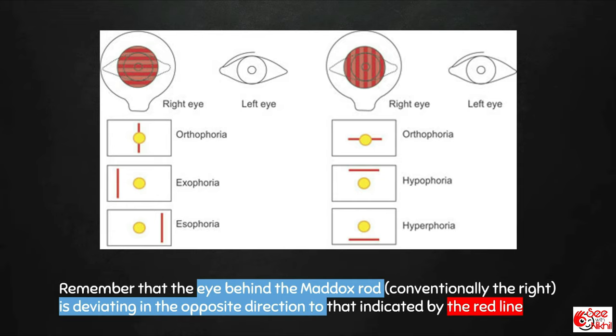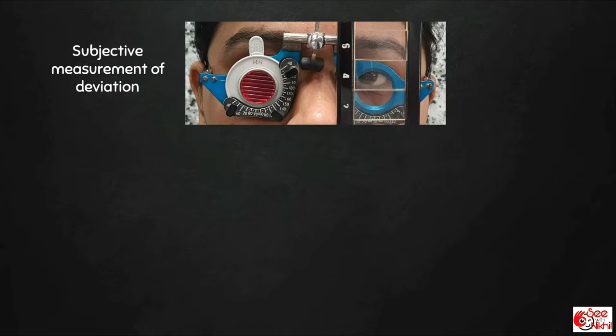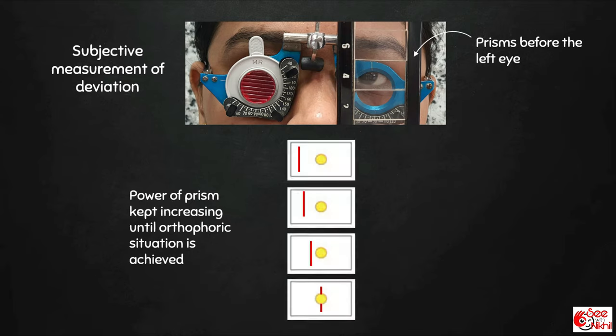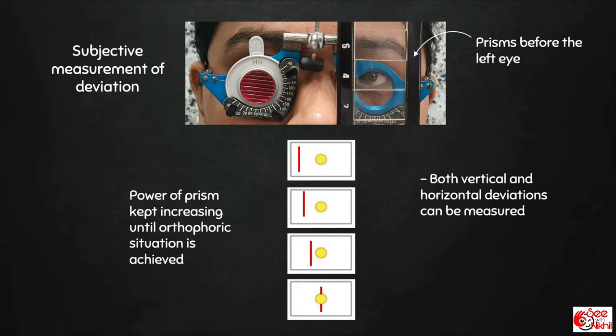Subjective measurement of deviation can be done using the Maddox rod. The Maddox rod is placed in front of one eye and a prism in front of the other eye, and the power of the prism is increased until the images overlap. The power at which orthophoria is achieved is the measure of subjective deviation. Both vertical and horizontal deviations can be measured, but the test cannot differentiate a phoria from a tropia.